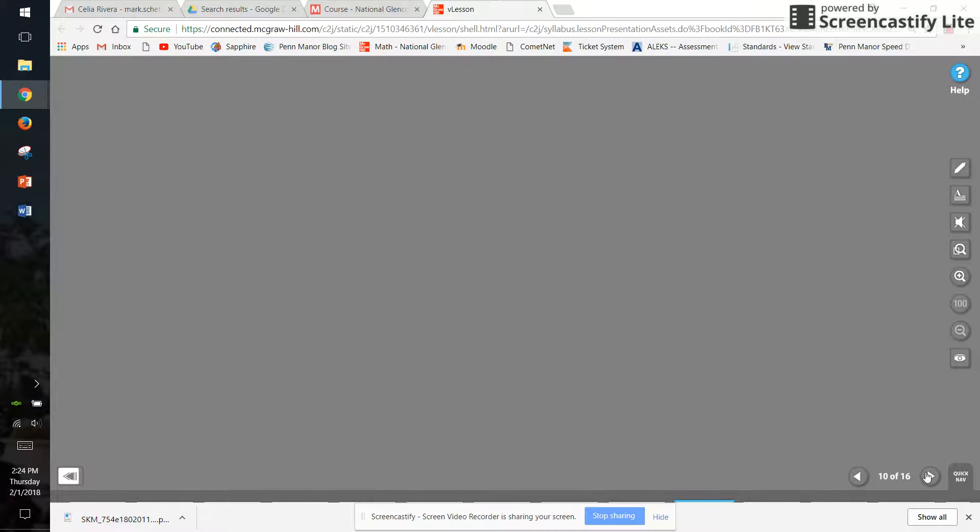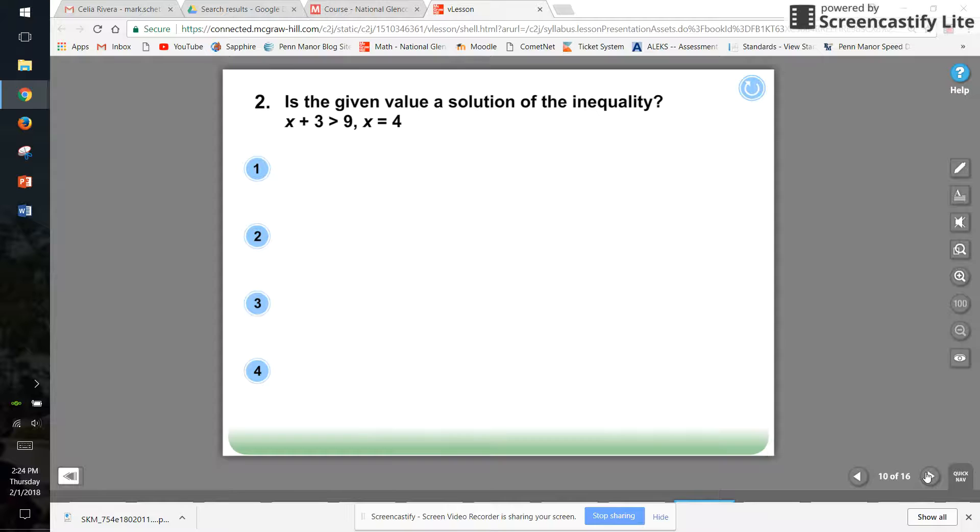How about another example? Here the symbol's changed a little bit. We have 12 is less than or equal to 18 minus y. And if y equals six, does that solve the inequality? Okay, let's take a look. 12 is less than or equal to 18 minus 6. 18 minus 6 is 12. That would be true because 12 does equal 12.